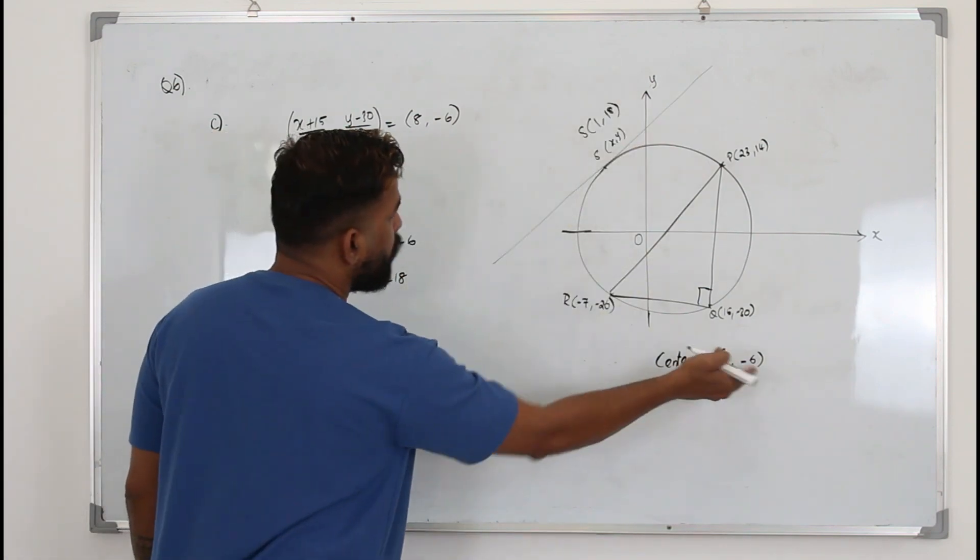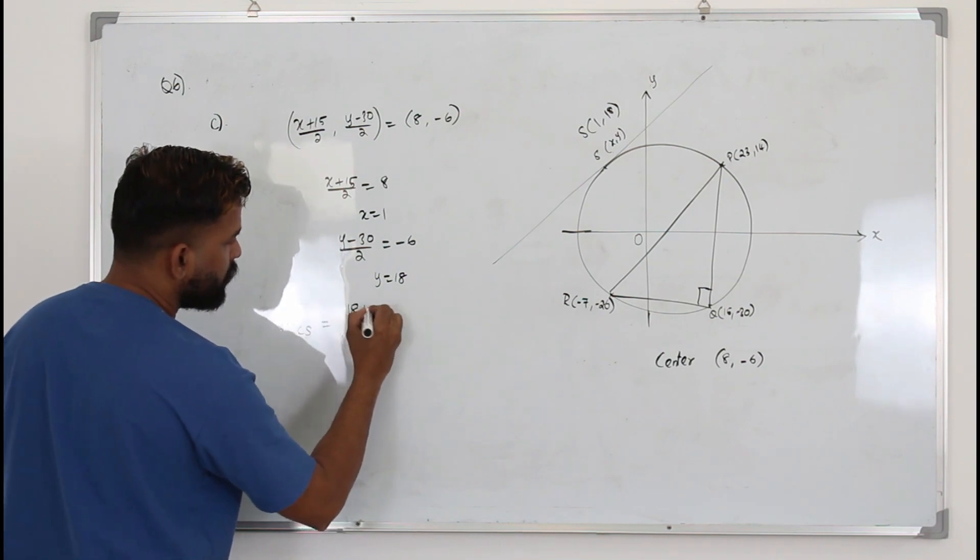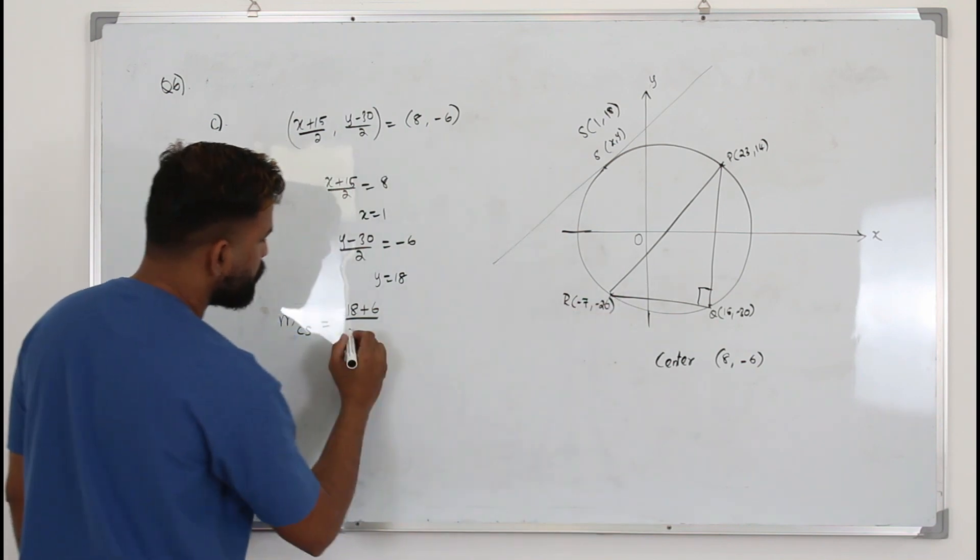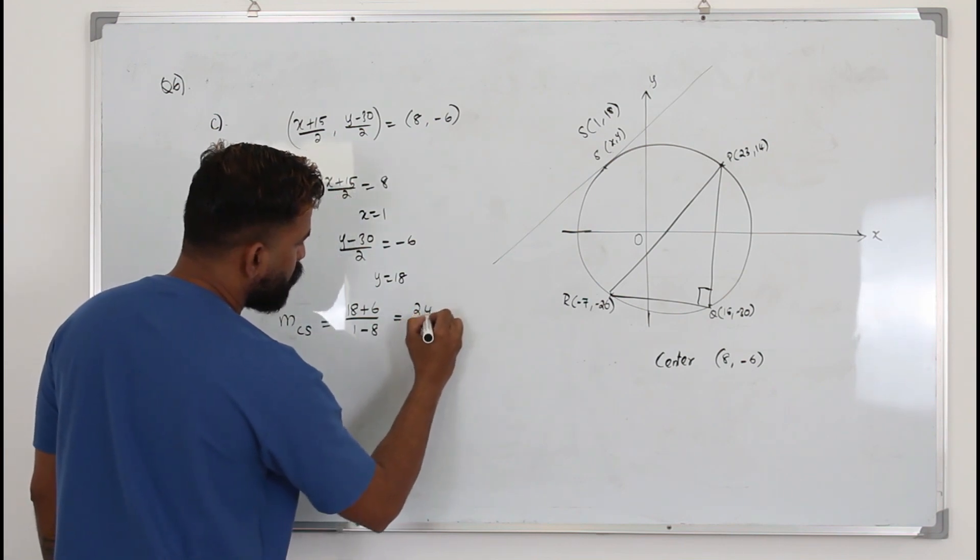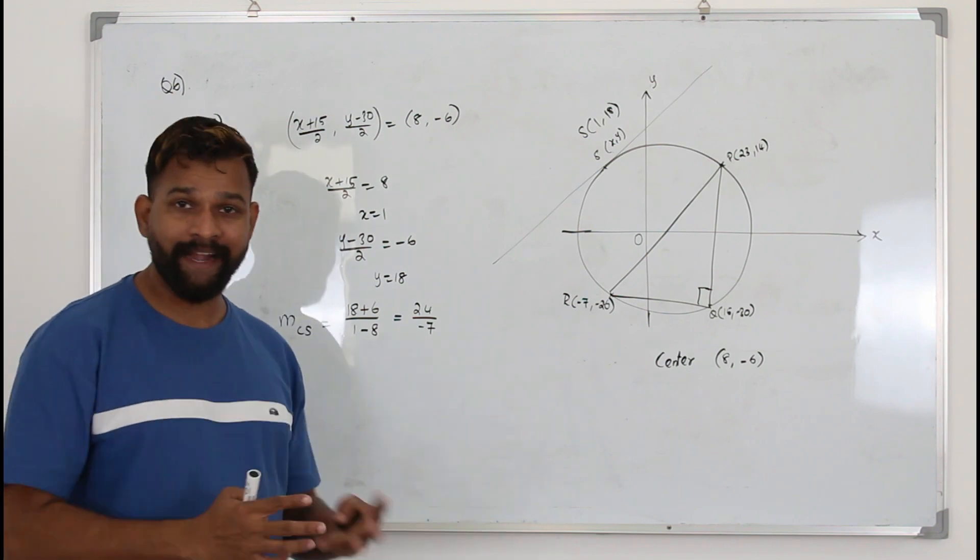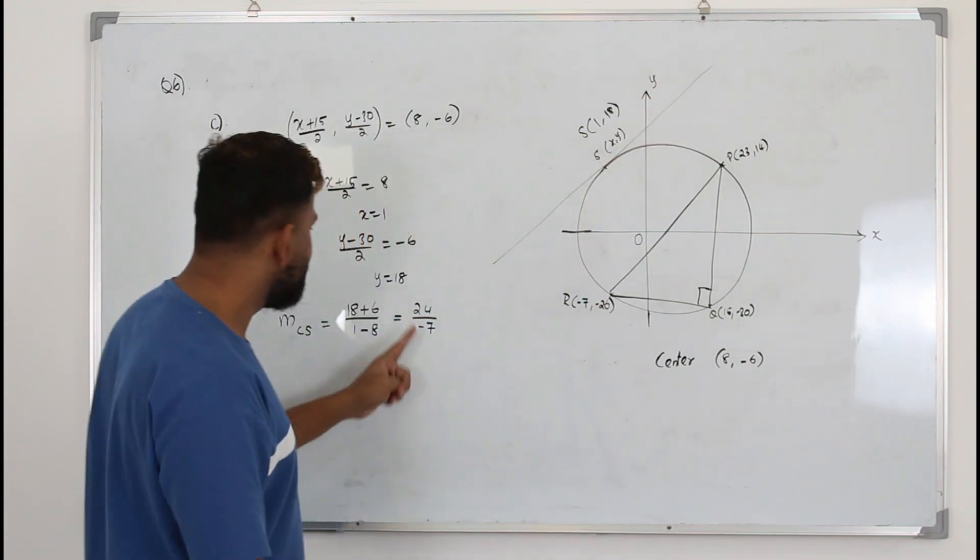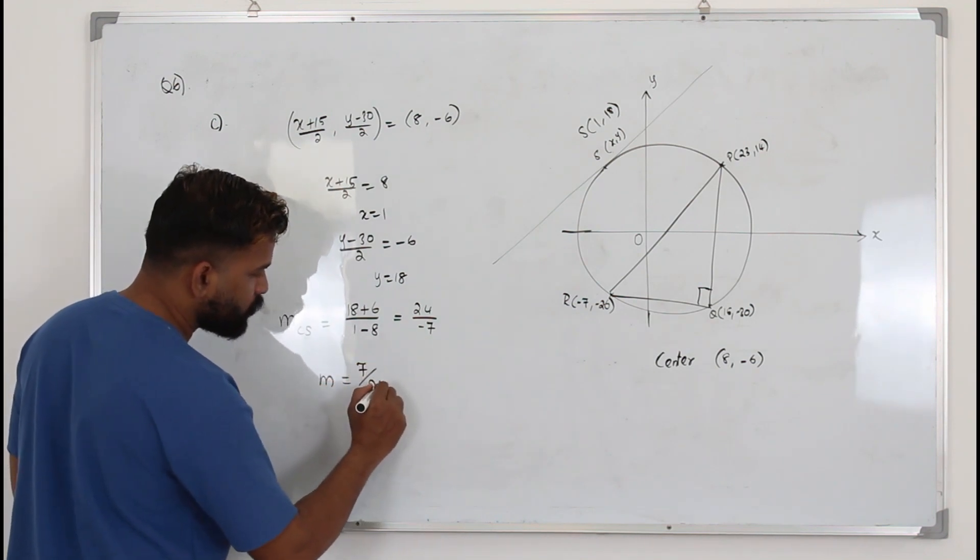X1 Y1 X2 Y2. So Y2 minus Y1 divided by X2 minus X1. 18 minus negative 6, so 18 plus 6, you get 24. 1 minus 8, you get 24 over negative 7. That's the slope of the radius. Now the slope of the tangent will be negative reciprocal of this. So it's 7 over 24.